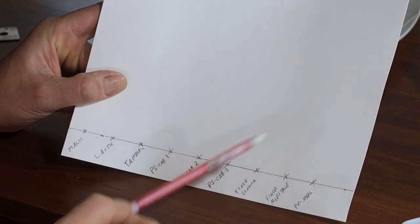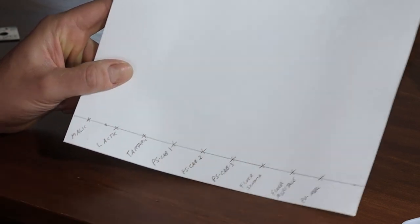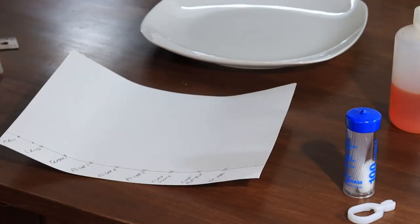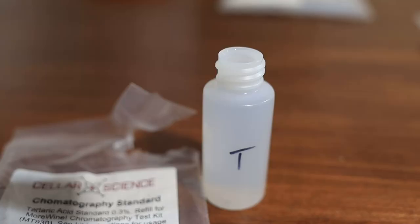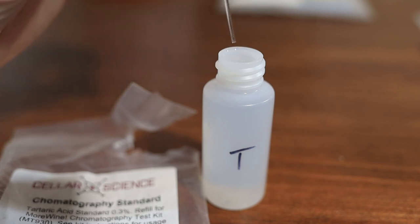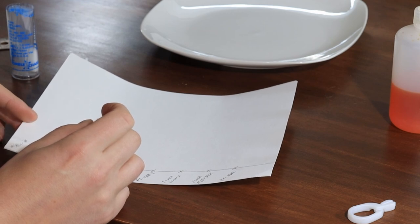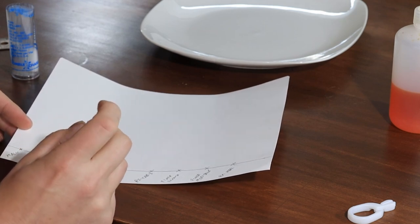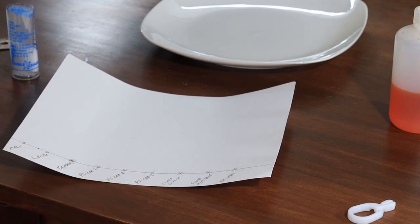Now I'm going to take my little standards. So this is just a solution with tartaric acid in it, kind of have a baseline. Stick a little capillary tube in there. And we want to make like a quarter inch dot on here. There we go. And I'll do that for tartaric, lactic, and malic. I like to keep these in the fridge when I'm not using them because I don't want them to start kind of fermenting.